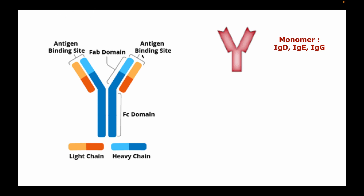Looking at this image of antibodies, the simplest antibodies such as immunoglobulin D, E, and G are known as monomers. These monomers have Y-shaped macromolecules and are composed of four glycoprotein chains — two identical heavy chains and two identical light chains.